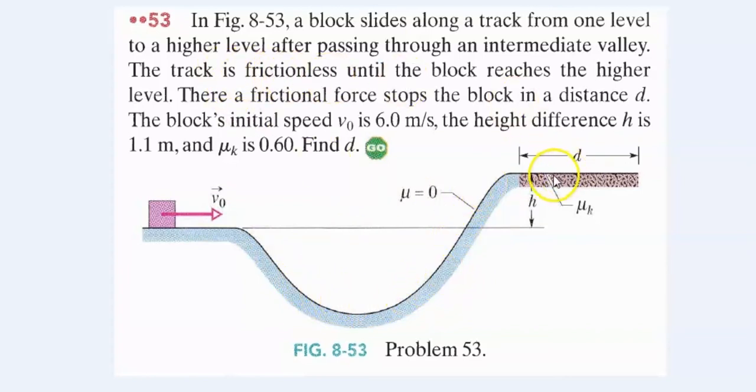The track is frictionless until it reaches up here. There's a frictional force here that stops the block in a distance d. It's initially going at 6 meters per second. And the difference in height between the first level and the higher level is 1.1 meters. The coefficient of kinetic friction up here is 0.6. Find the distance it stops over.